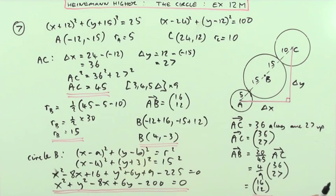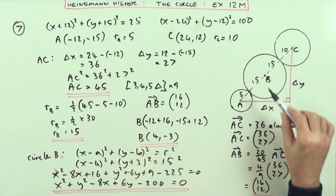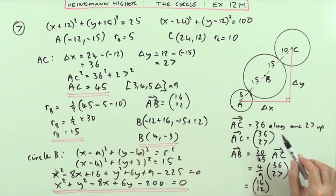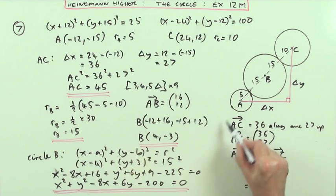The radius was found using Pythagoras and subtracting distances, while the center was found using the displacement method.